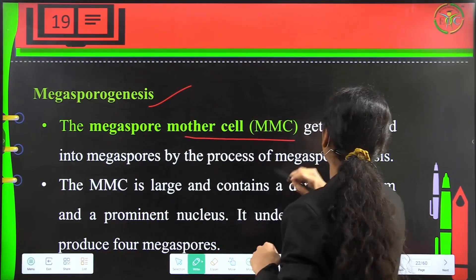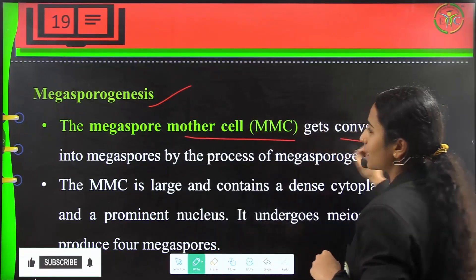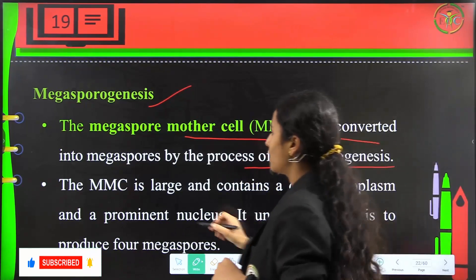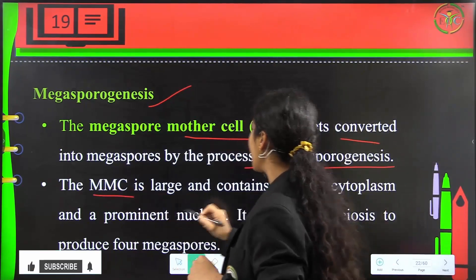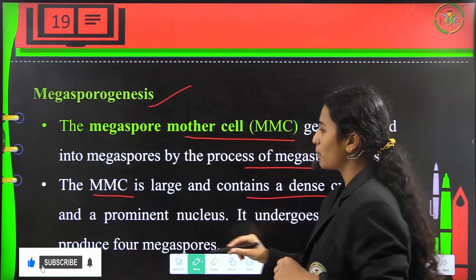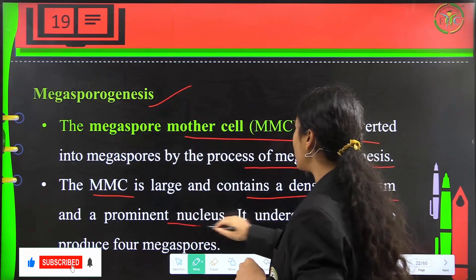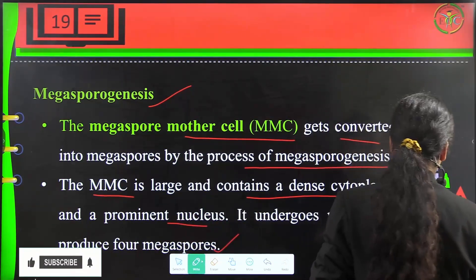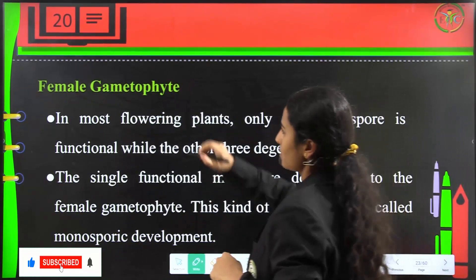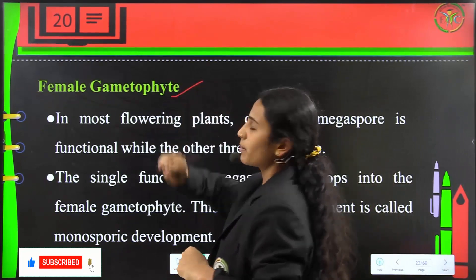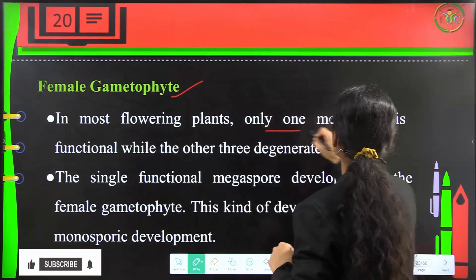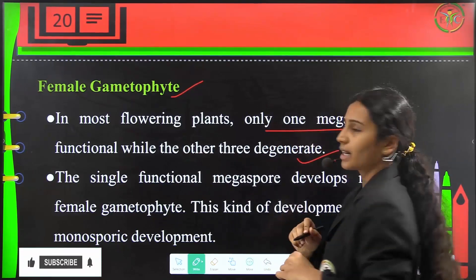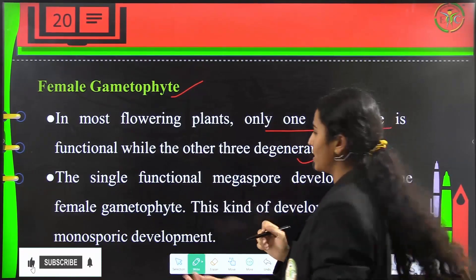The megaspore mother cell (MMC) will get converted into megaspores by megasporogenesis. The MMC is large, contains dense cytoplasm and a prominent nucleus, and will undergo meiosis to produce four megaspores. In most flowering plants, only one megaspore is functional while the other three degenerate.